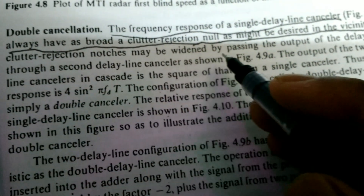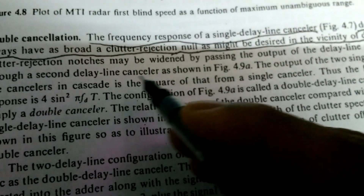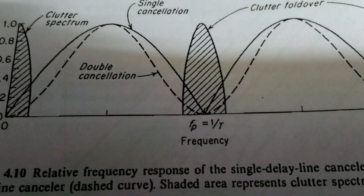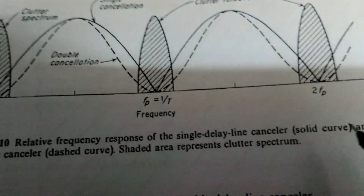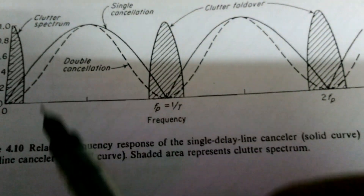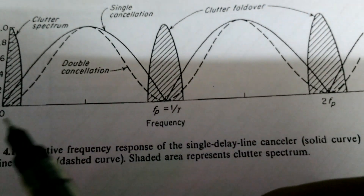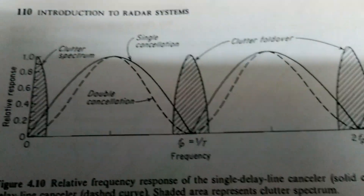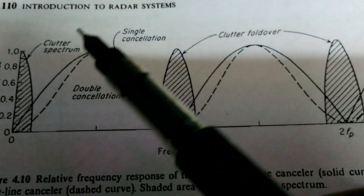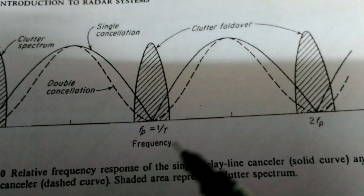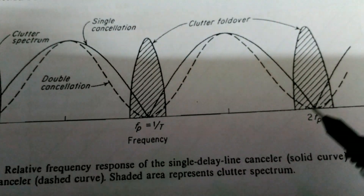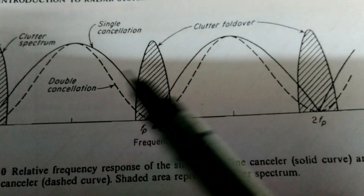By this approach, clutter rejection is widened by passing the output of the delay line canceller through a second delay line canceller. Looking at the frequency response comparison: the solid line represents the single cancellation technique and the dotted line represents the double cancellation technique. For every pulse repetition frequency interval, the spectrum is considered. This is the concept of double cancellation.